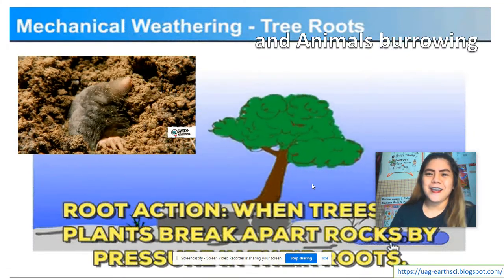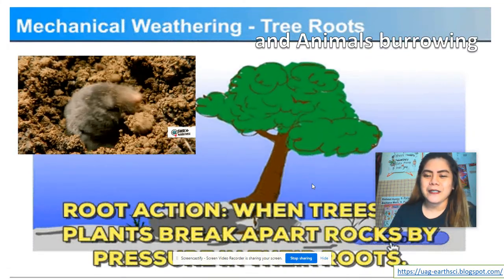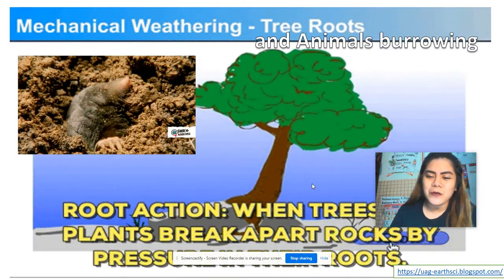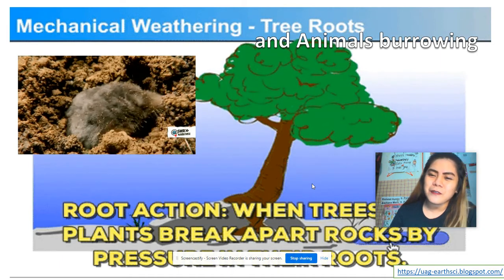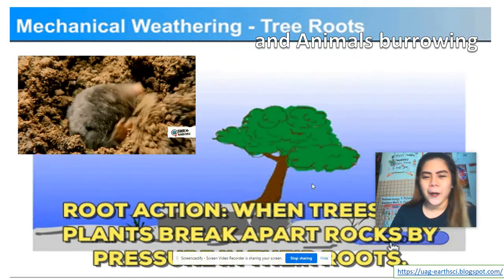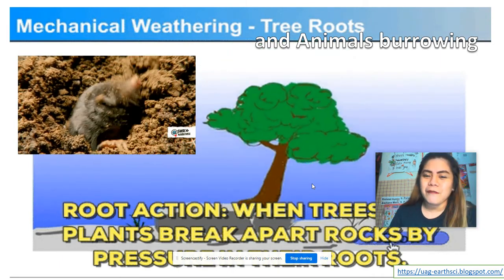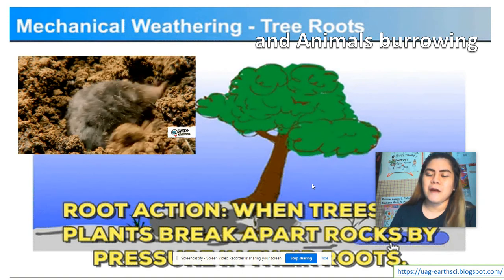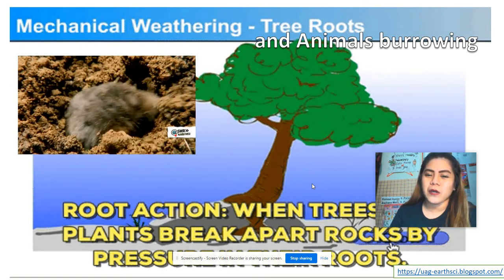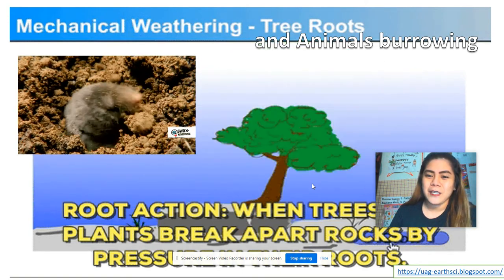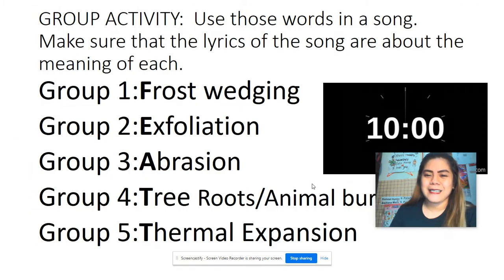The next one is tree roots and animals. Because of the tree roots, rocks tend to break apart. The same with the burrowing of animals — it is one of the agents that also causes weathering.